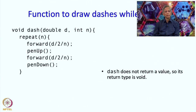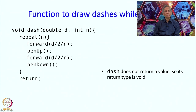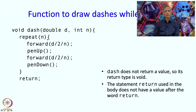At the end the function will return. Note that we have not said return something — we are not expecting to return any value, so we just say return followed by a semicolon. That is it.